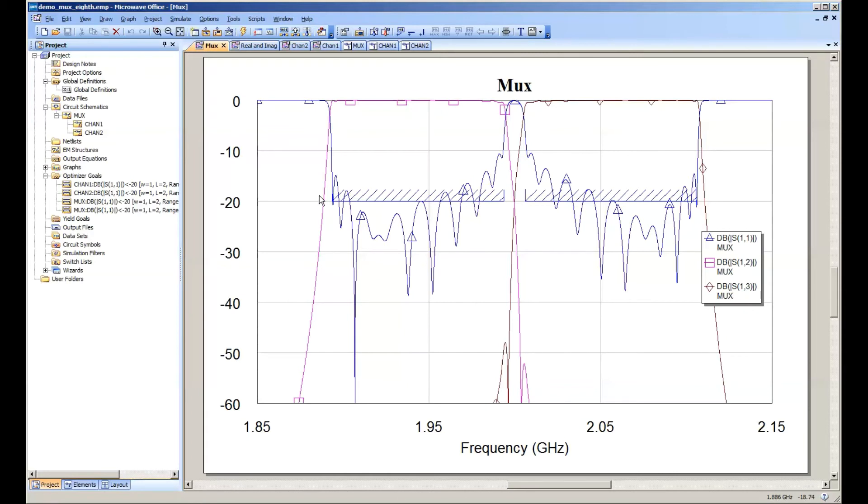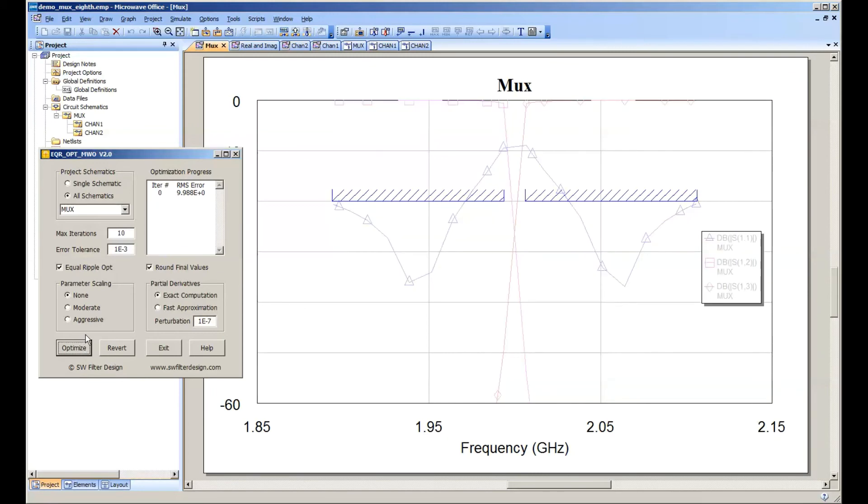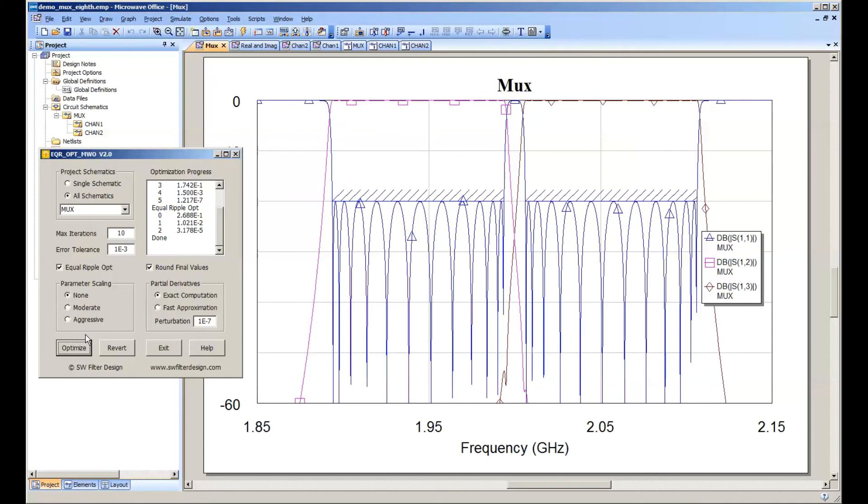So if we go back to the upper level MUX, we can use the optimizer again, and it will tell it, yeah, look at all the schematics and MUX is the top level schematic. And when we hit the optimize button and again, we've made it perfectly equal ripple.